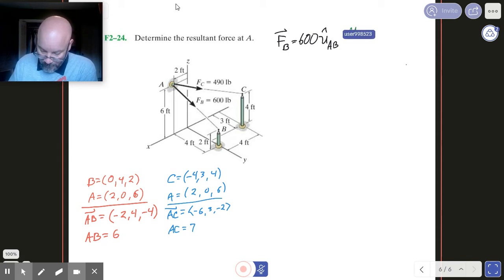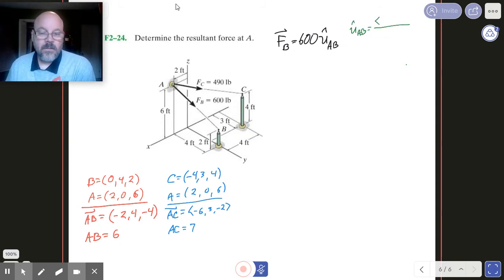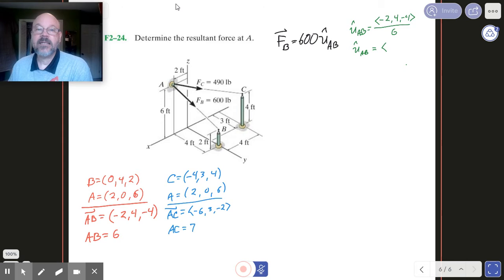UAB is minus 2, 4, minus 4, minus 2, 4, minus 4. And it had a magnitude of 6. So my unit vector for AB. So I've got minus 2 divided by 6. So 2 over 6, that's a third. So I've got minus 1 third. And then 4 over 6 is 2 thirds. And negative 4 over 6 is negative 2 thirds.